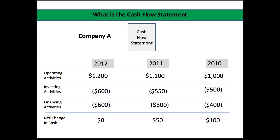Let's go through a generic example — Company A's cash flow statement, covering years 2010, 2011, and 2012. The first line is operating activity, the second is investing activity, and the third is financing activity. The fourth line is the net change — the sum of all three. Starting with operating activities, in 2010 Company A generated $1,000, then $1,100 in 2011, and $1,200 in 2012. That's a nice steady growth and all positive numbers — this is the money the business is producing, the primary income from selling candy.